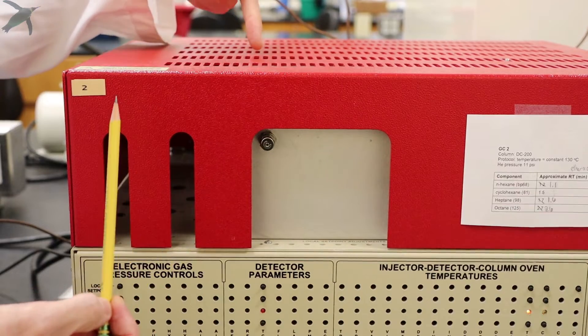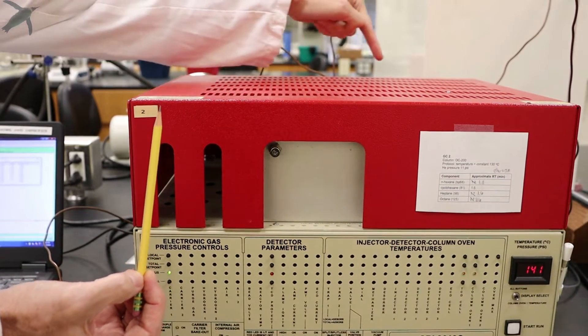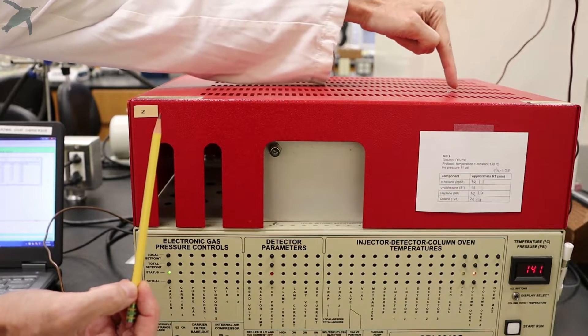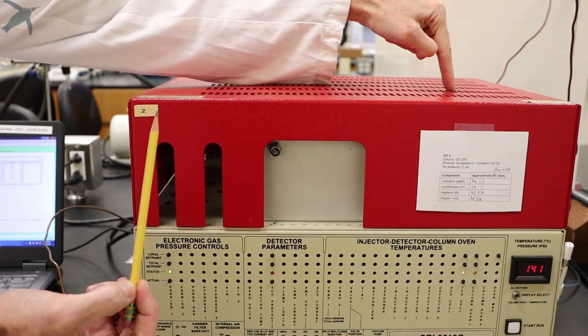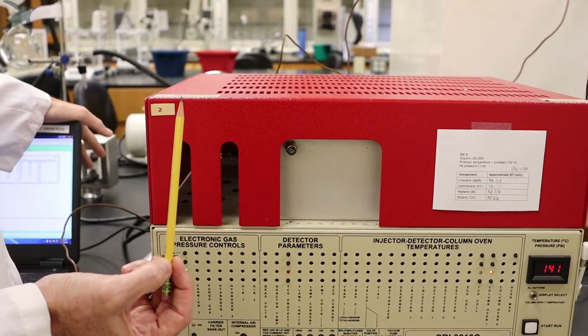Your sample goes in this way, the column winds up in this direction, and ends up here where the detector is. The detector will detect the signal and send it out to the computer for processing and display.